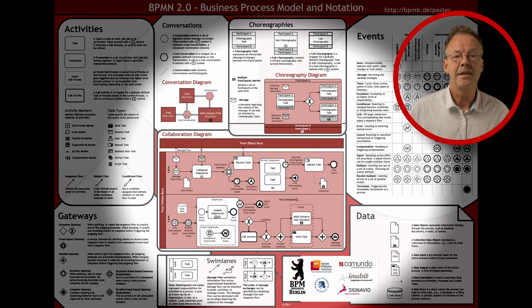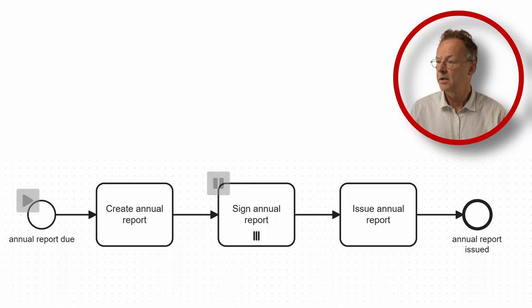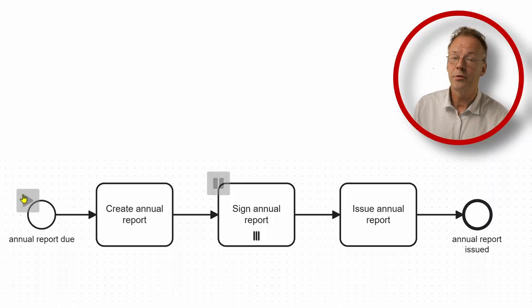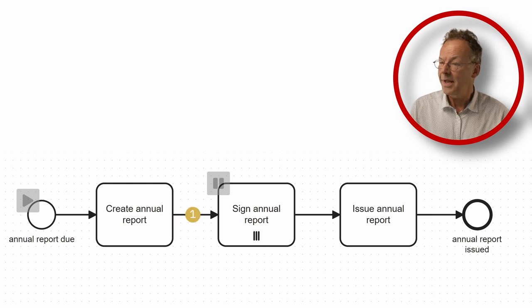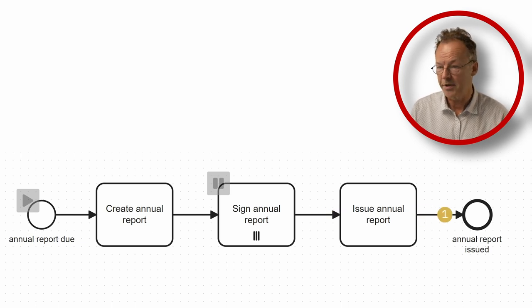In BPMN, this can be implemented with a multiple instance task. So the annual report is due. We create the annual report and then we have our multiple instance task with the parallel MI marker. And once all of the instances are finished, we continue and issue the annual report.